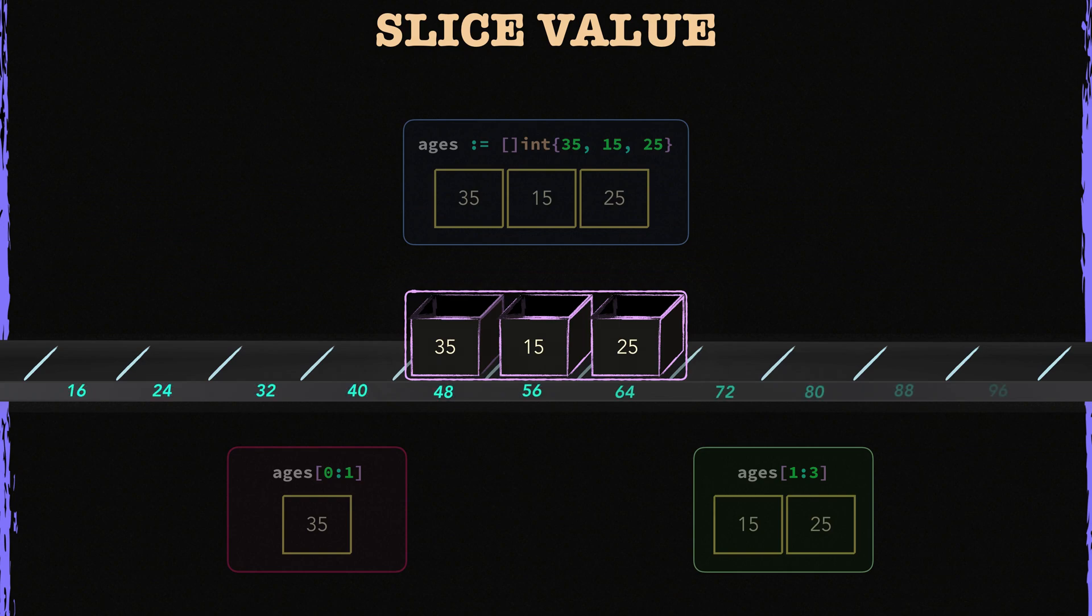Here are the imaginary memory addresses for each memory cell here. Let me ask you something. Can you call someone directly without knowing their phone number? In the same sense, a slice needs to know the location, or in other words, the memory address of its array to be able to find it on the computer memory.